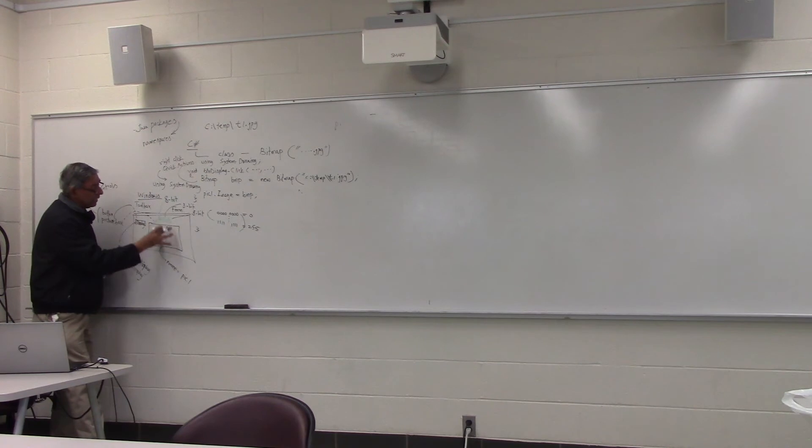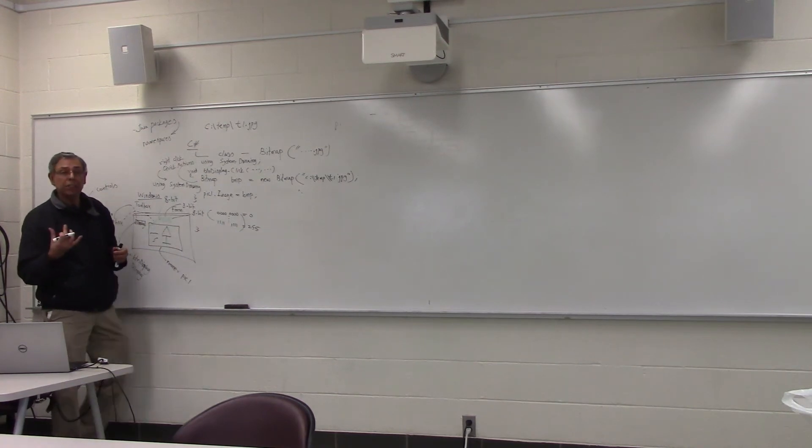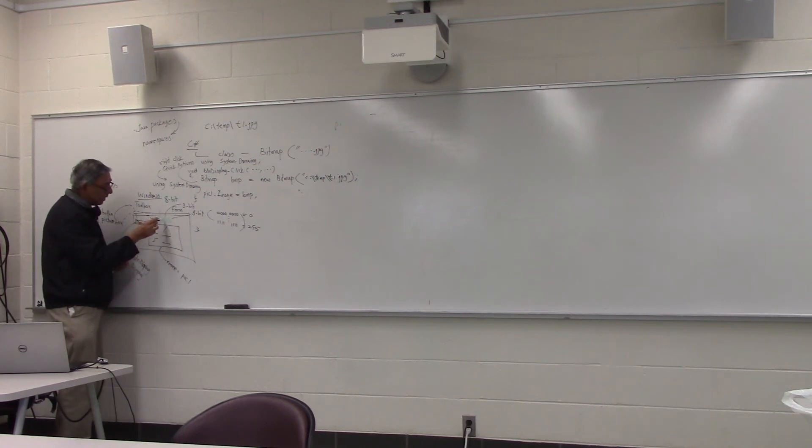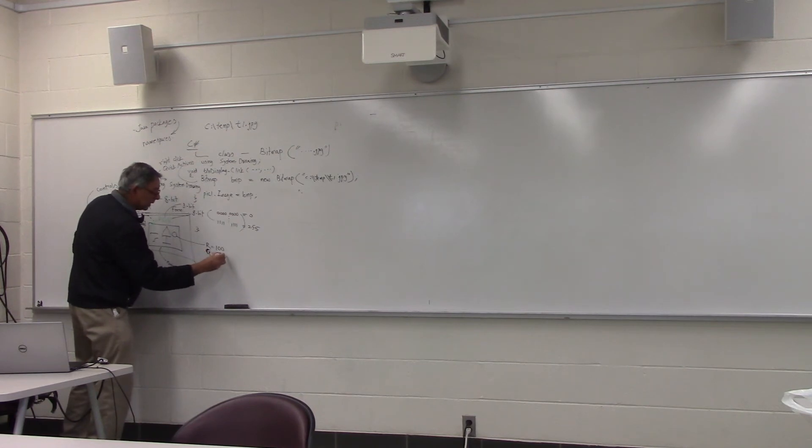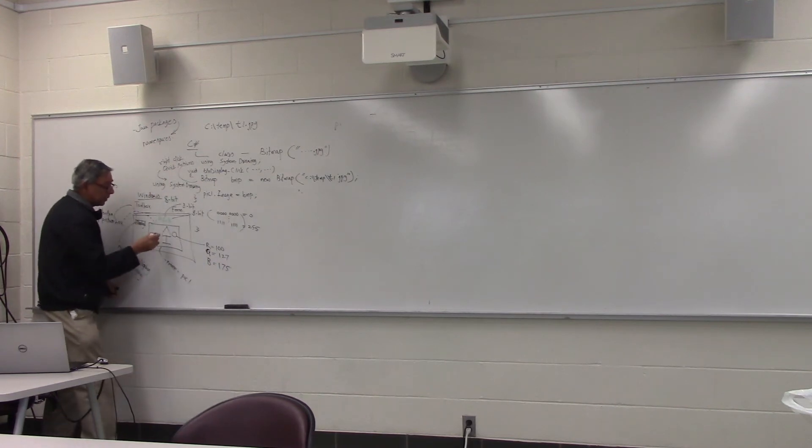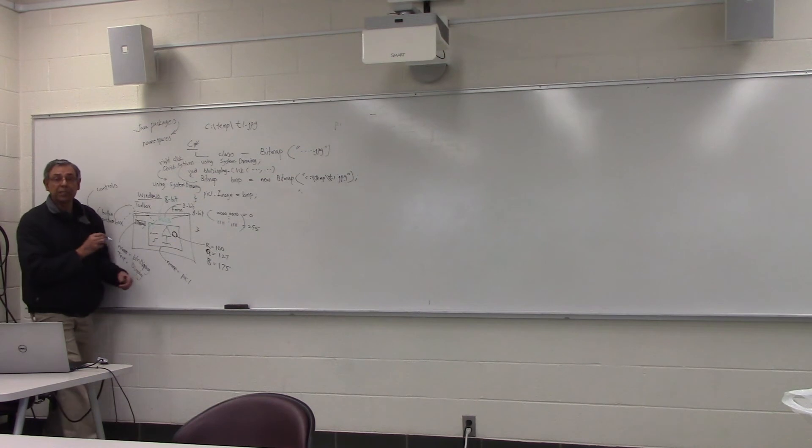If the image was taken under very dark conditions, then all we have to do is to every red, green, blue value, add a constant number. For example, let's pick a pixel. Some pixel. Let's say red is 100. Green is, let's say, 127. Blue is, let's say, 175. Those are the values for this particular pixel. And we wanted to make the whole picture brighter by a value of 10. Then all you have to do is add 10 over here, add 10 over here, add 10 over here, and we display the image.